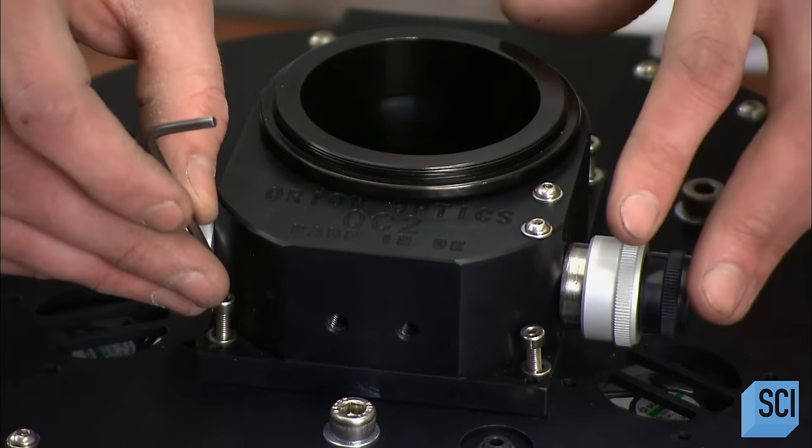He flips over the assembly and slides that precision-made mirror onto the housing. A cork ring cushions the mirror so a retaining ring can be installed without a scratch. The telescope's primary mirror is now secured to the housing.